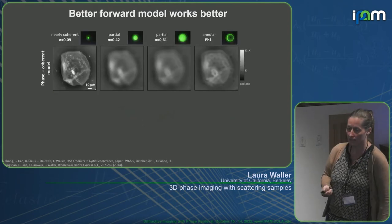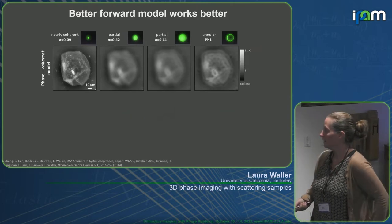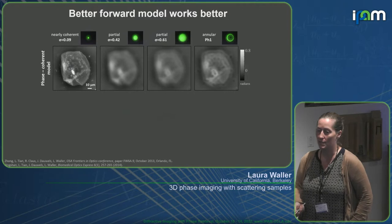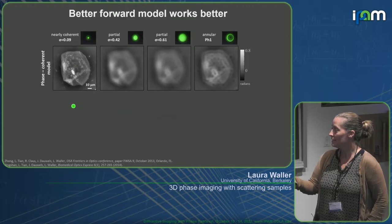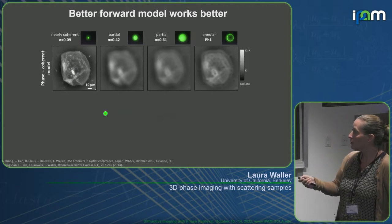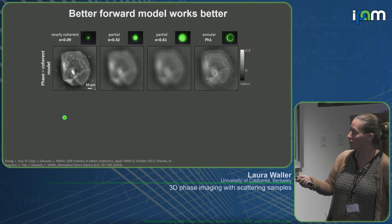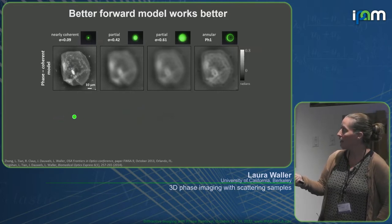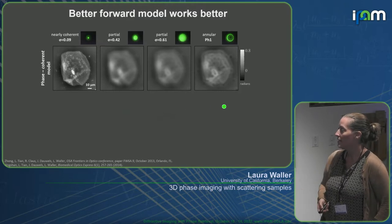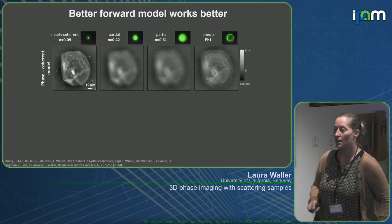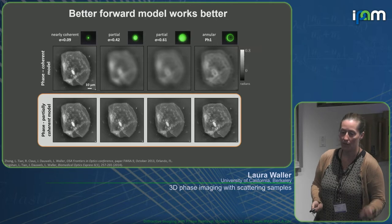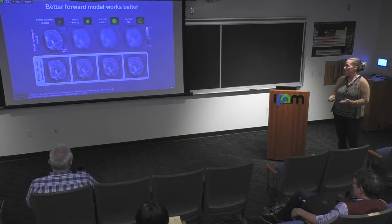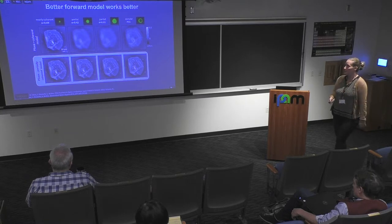It's good to use a big source — sometimes for higher resolution, sometimes just for light throughput. But if you use a coherent model, which is the simple physical model, it only works when the source is actually coherent. A small source gives a spatially coherent source and works well, but as I make the source bigger, I get blurred results. The solution was to put the source shape into the forward model, which works well — if you know the source shape, you can solve for phase accurately and even get resolution benefits.